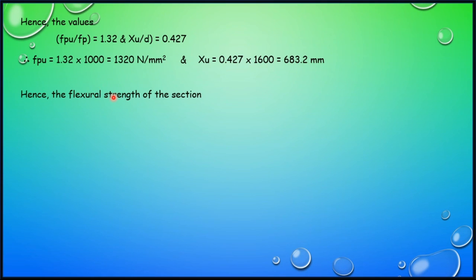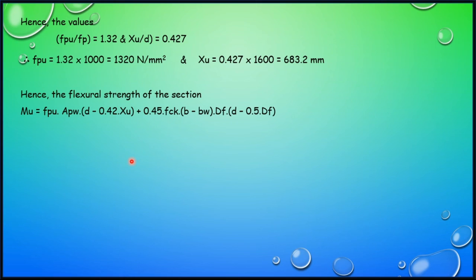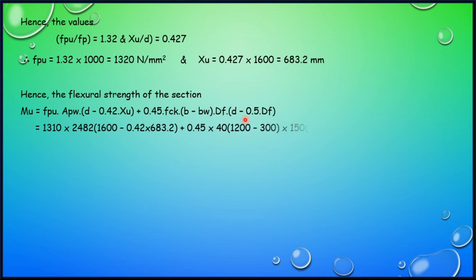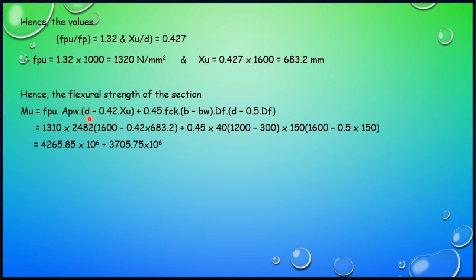Hence, the flexural strength of the section is calculated using: MU = FPU × APW × (D − 0.42 × XU) + 0.45 × FCK × (BF − BW) × DF × (D − 0.5 × DF). Substituting all known values, the total flexural strength comes out to be 7971.6 × 10⁶ N·mm, which is written as 7971.6 kN·m.